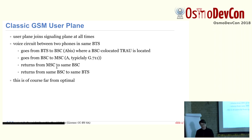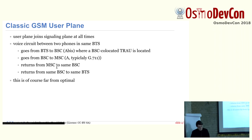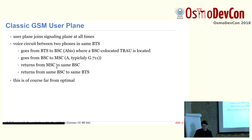The voice channel would go from the BTS to the BSC, and in the BSC you would have a Transcoder and Rate Adaptation Unit — a TRAU — which transcodes from the Abis interface, which would be AMR, EFR, FR, or HR, transcodes that to ALAW or ULAW, and then feeds it from the BSC to the MSC as G.711 on the A interface.